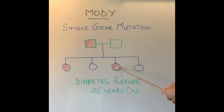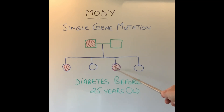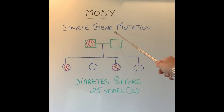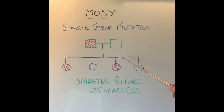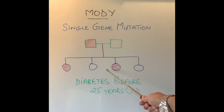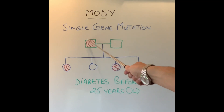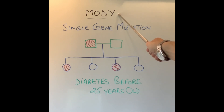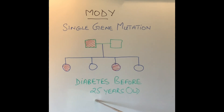And when that child becomes a parent, the chance of passing MODY to his or her children will again be 50 percent. So it goes from one generation to the second, to the third, to the fourth. That is the difference between MODY and other types of diabetes like type 1 and type 2. Because it is called maturity onset diabetes of the young — remember that word 'young' — most of these patients will develop diabetes before the age of 25.